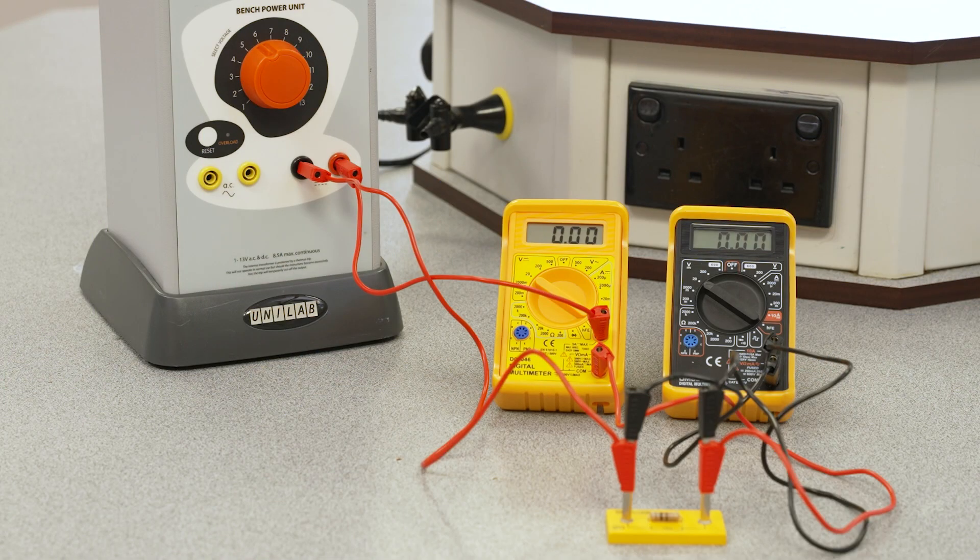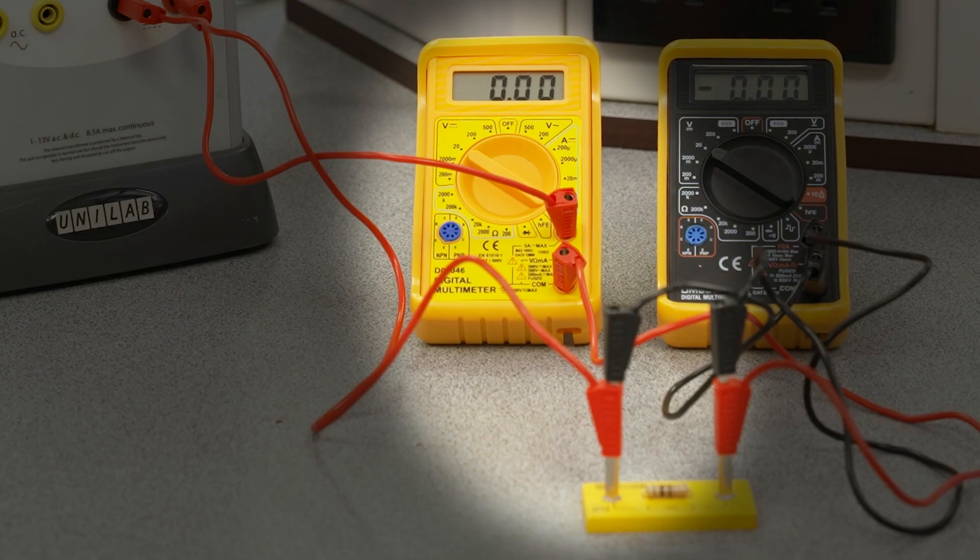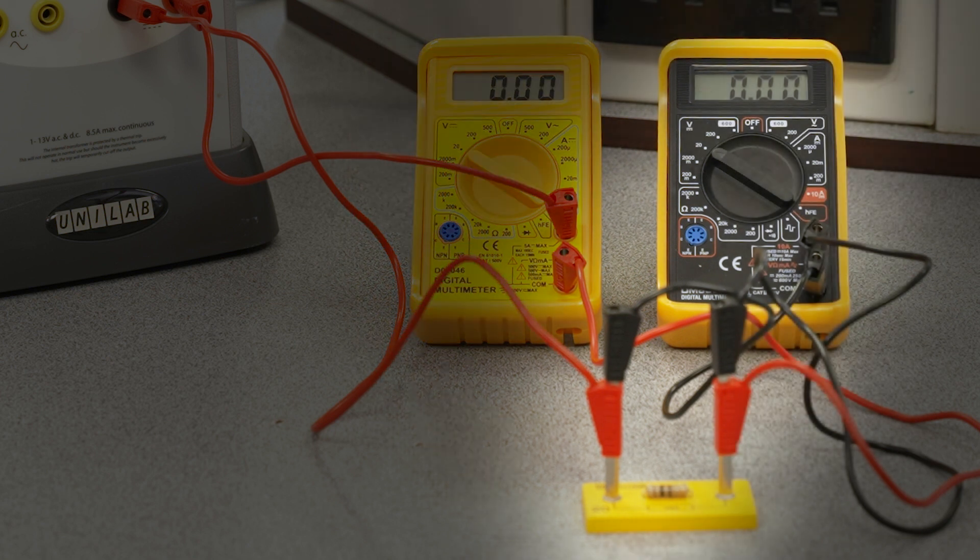For the first circuit we're going to place one resistor in a simple circuit. Remember the ammeter is connected in series with the resistor and the voltmeter is connected in parallel to the resistor.